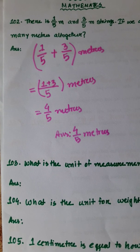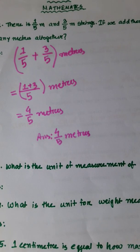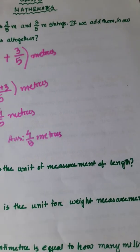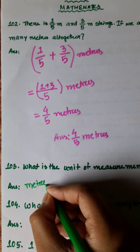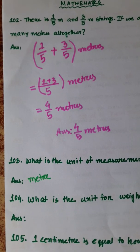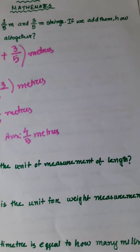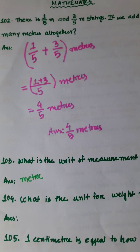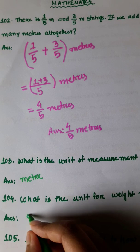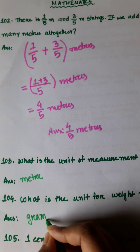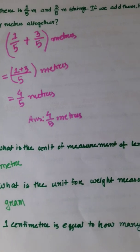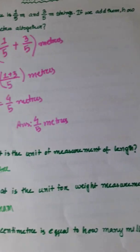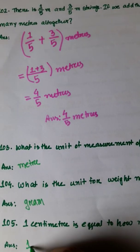Number 103: What is the unit measurement of length? The unit measurement of length is meter. Number 104: What is the unit for weight measurement? The unit for weight measurement is gram. Number 105: 1 centimeter is equal to how many millimeters? 1 centimeter is equal to 10 millimeters.